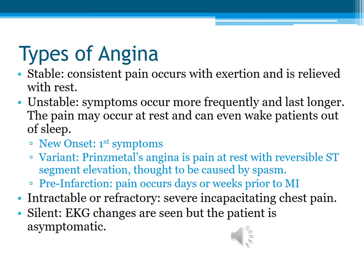Sometimes the patient will be asleep and the pain will wake them out of a sound sleep. New onset angina means they are just beginning to have symptoms for the first time. Prinzmetal's angina is pain at rest with ST elevation, thought to be caused by spasms in the coronary muscles. Pre-infarction pain occurs and will probably become more frequent and more intense the closer a person gets to having a myocardial infarction, which is why it's important to teach people that if they have recurring chest pain, they need to be seen by a doctor.